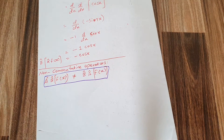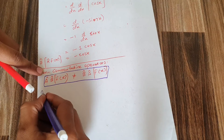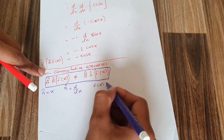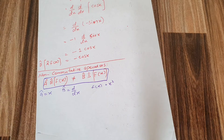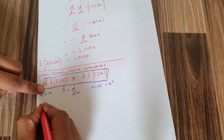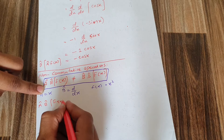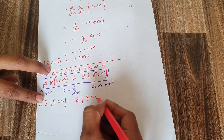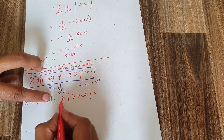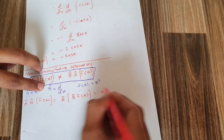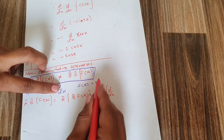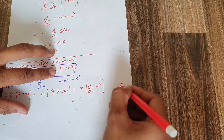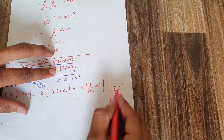To explain this, I'll take an example: operator A equals x (multiplication by x), operator B equals d/dx, and the function f(x) equals x². First, I write A·B·f(x), meaning I apply B first and then A. Plugging in the values: A is x, B is d/dx, and f(x) is x².